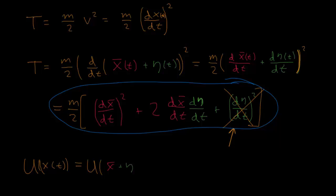u of x bar plus eta. And again these are both functions of t. Now we might not be quite sure how to deal with this. But if we are counting eta as small, we can actually write this as a Taylor series. So we can say that this equals u of x bar, right? The minimum path that we are talking about. Plus eta times the first derivative of u. So the first derivative of u, u prime evaluated at x bar.